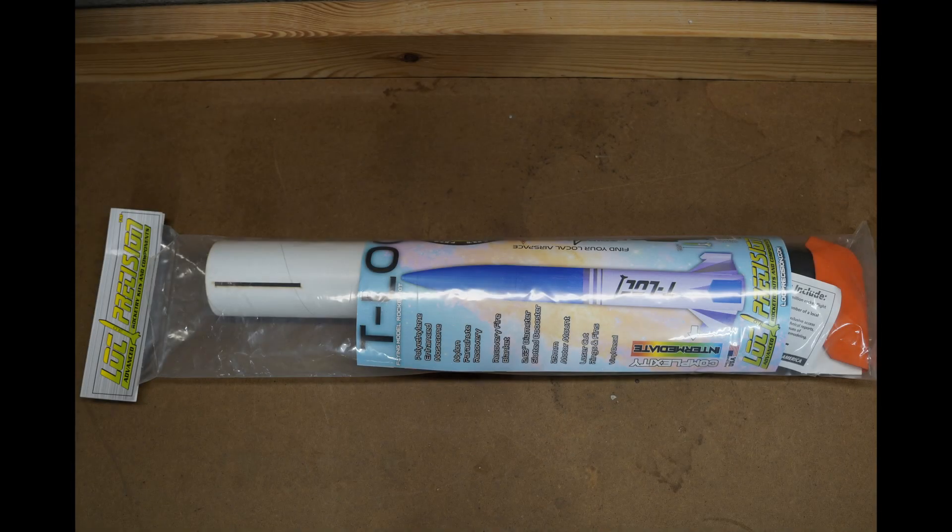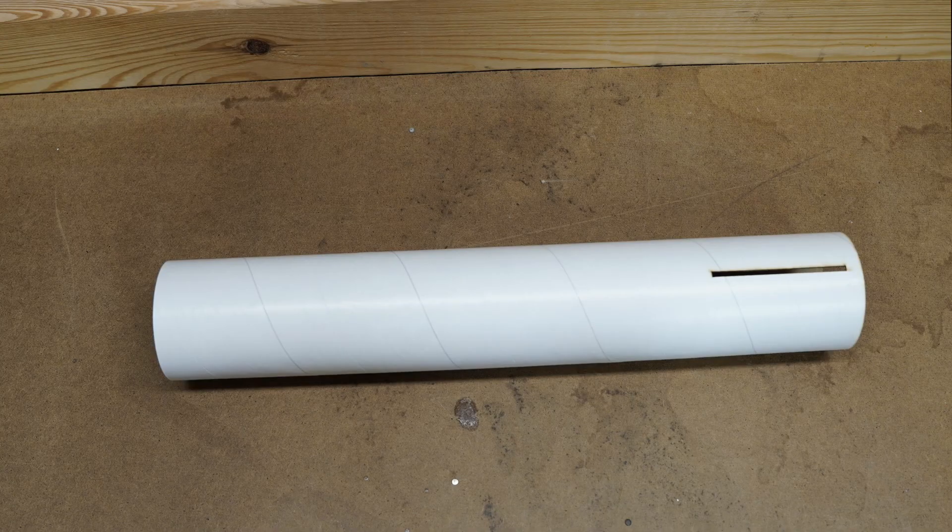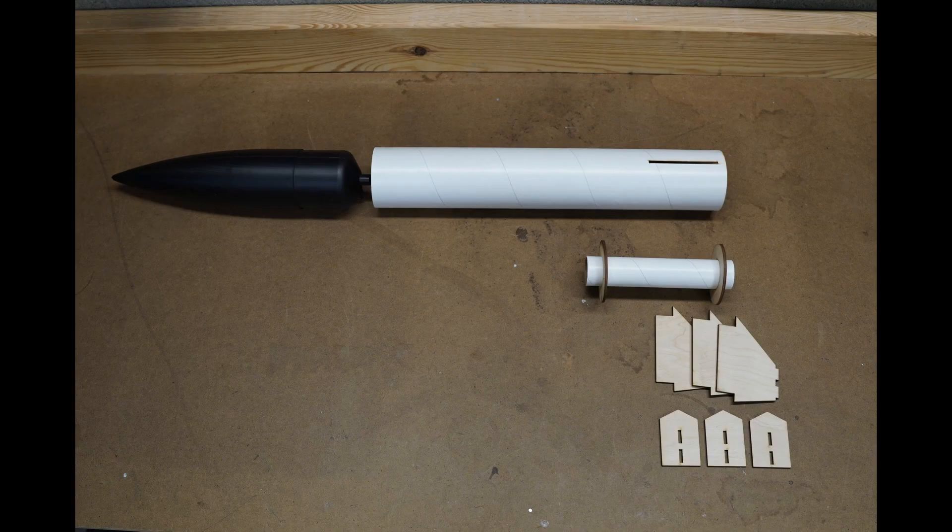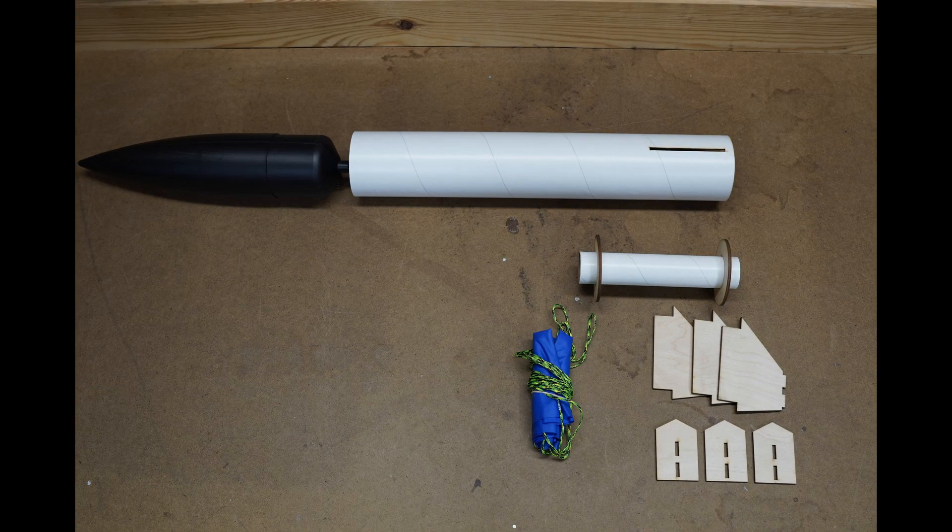From the model rocket kit we're going to use the body tube, the nose cone, motor mount assembly, the fins, parachute, and a fire blanket.